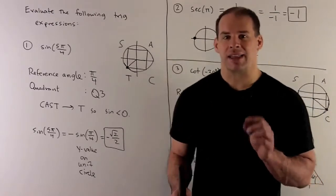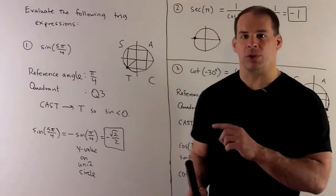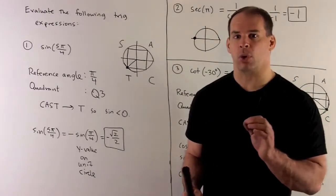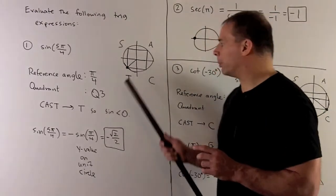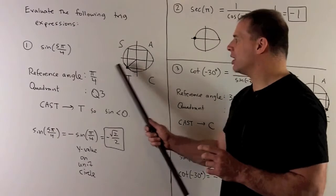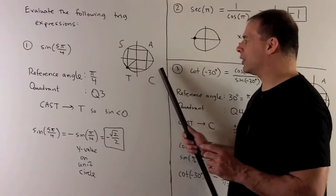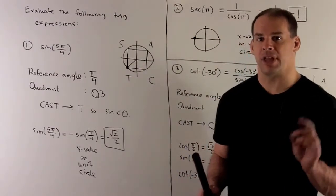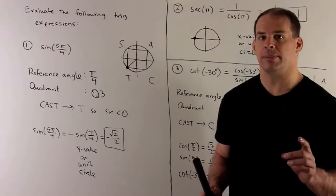To check: that's going to be the y value in the unit circle for 5π over 4. Our point is right here, so its y value is definitely going to be negative. So that checks out.